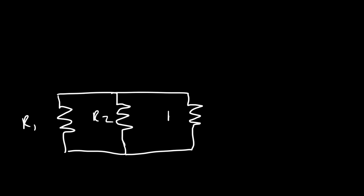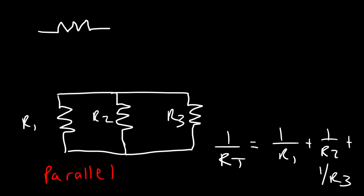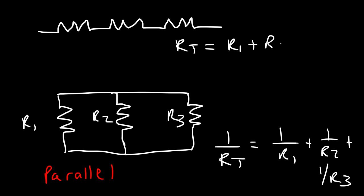Sometimes you may have more than two resistors in parallel. If there are three resistors connected in parallel — R1, R2, R3 — then 1 over RT equals 1 over R1 plus 1 over R2 plus 1 over R3. Now if you have three resistors in series, the total resistance is simply the direct sum of those three resistors.